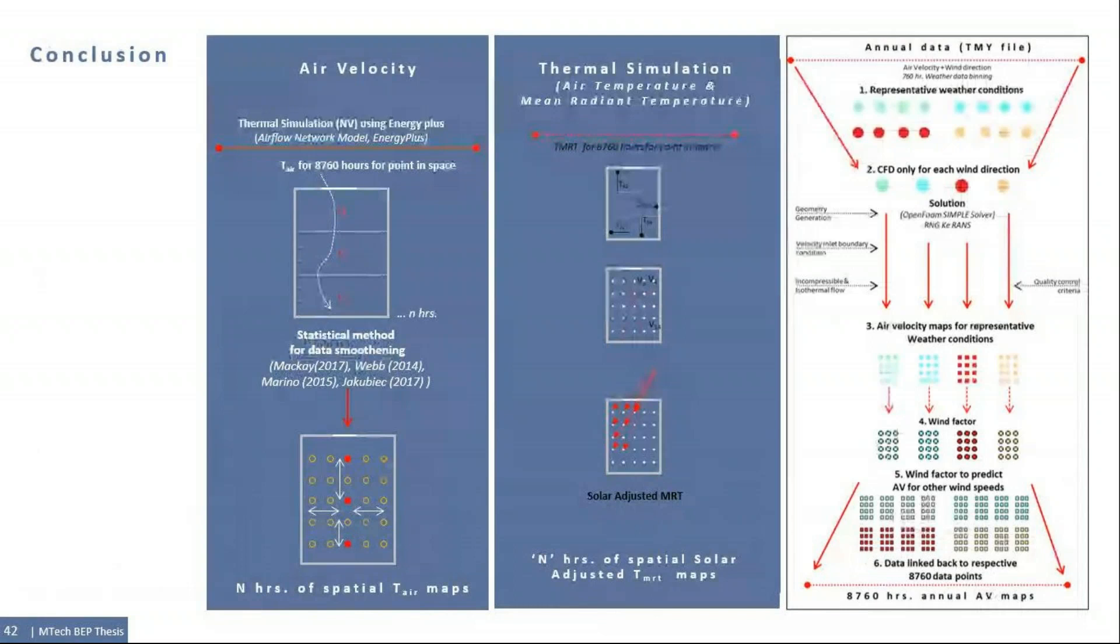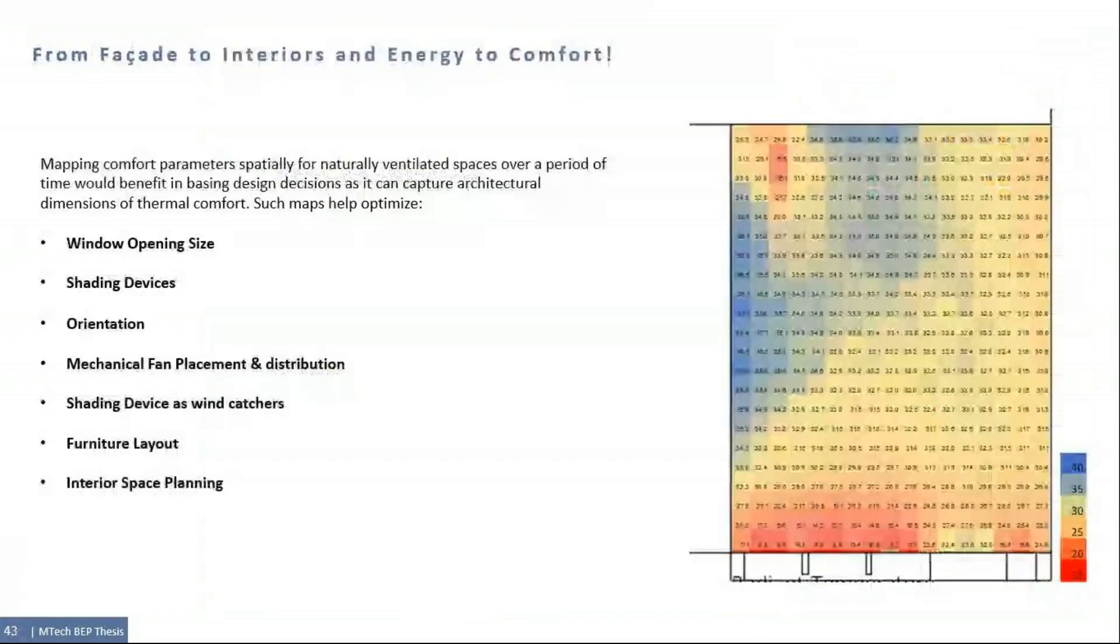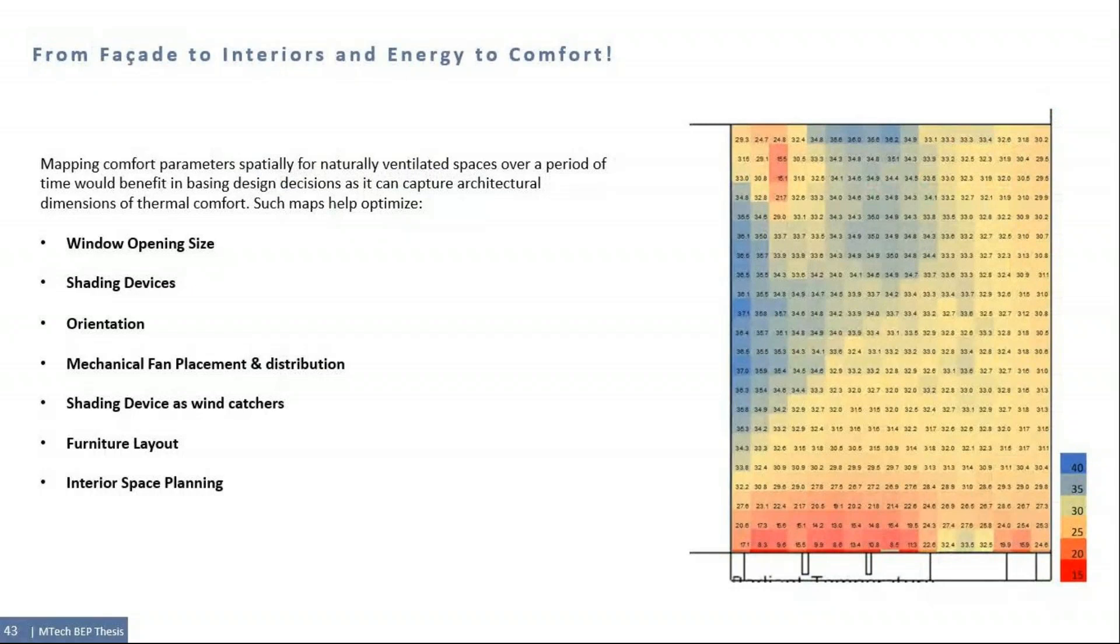To conclude, the study proposes a methodology and splits the workflow into thermal simulation to calculate air temperature and MRT and CFD to calculate air velocity. The study proposes validated methodology from the literature. The air temperature is a simple interpolation of the EnergyPlus output and mean radiant temperature is calculated by multiplication of view factor for a stated point by the surface temperature. The impact of direct solar radiation has been incorporated. To increase the computation time of CFD and decrease the number of CFD runs, an assumption of isothermal air flow has been made and buoyancy driven assisted ventilation has been ignored. With these assumptions, the number of CFD runs reduced only to the number of segments the wind rose is divided to and thereafter wind factors can be obtained across the space. Thus, thermal maps help us to achieve thermally diverse and richer design environment as they enable designers to fully understand the spatial and temporal implications of design on thermal comfort.